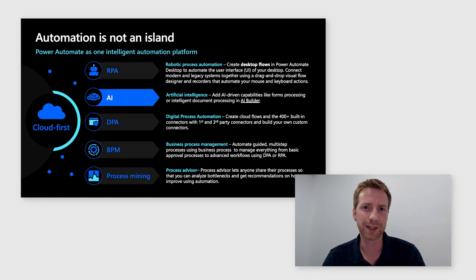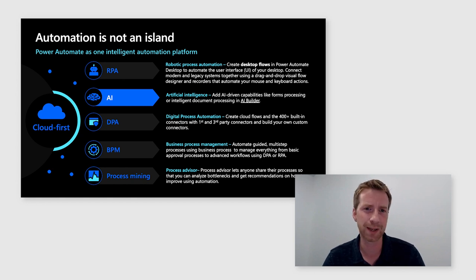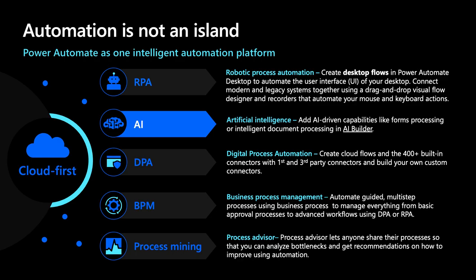Power Automate also includes business process management to automate guided multi-step processes, managing everything from basic approval processes to advanced workflows using RPA and DPA. And finally, it includes Process Advisor, which is a new process mining capability that helps you to understand and analyze bottlenecks in your business processes so that you can improve them using automation.